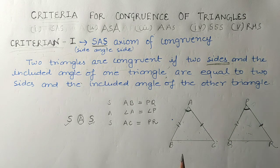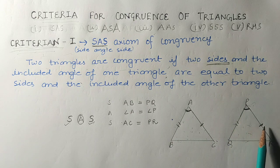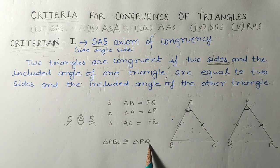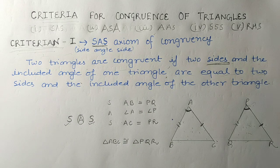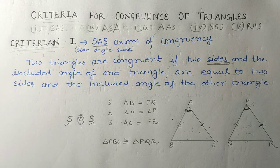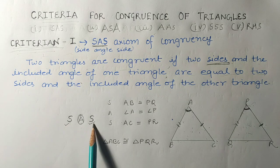If we show only these three components of one triangle are equal to the three components of the other triangle, then the triangles are congruent — that is, triangle ABC is congruent to triangle PQR — by the Side-Angle-Side criterion.